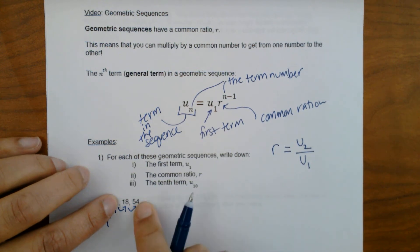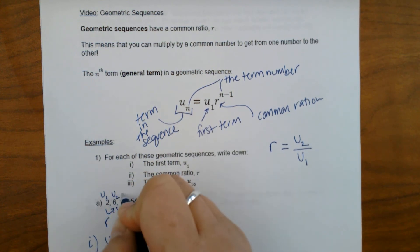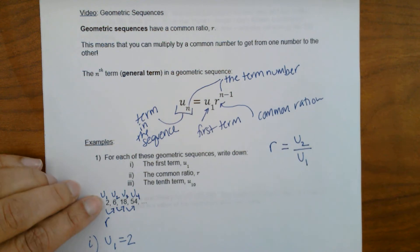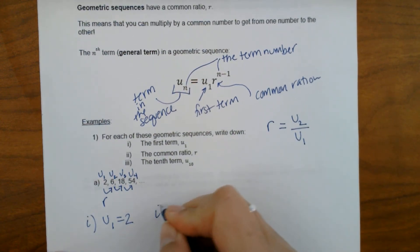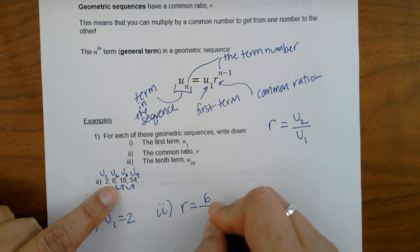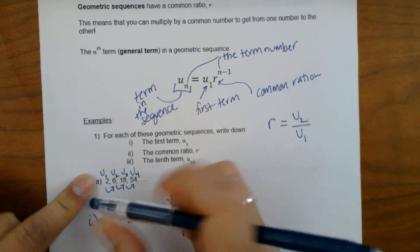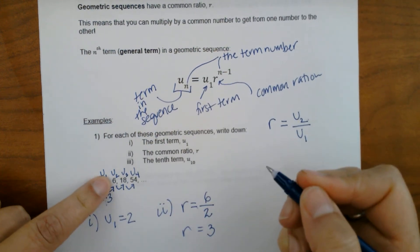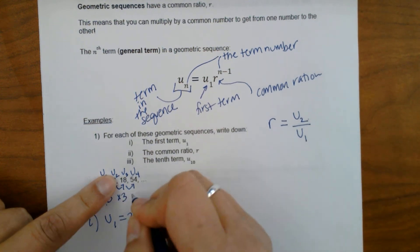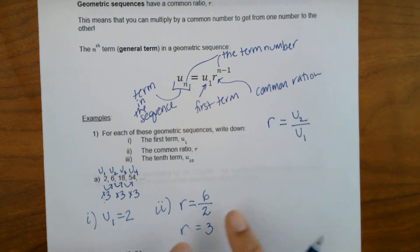For part one, u sub 1 equals 2 — that's u sub 1, u sub 2, u sub 3, u sub 4. For the common ratio, we take the second term, 6, and divide it by the first term, 2. Dividing 6 by 2 gives us a common ratio of 3. So 2 times 3 is 6, 6 times 3 is 18, 18 times 3 is 54 — that's why it's called a geometric sequence.